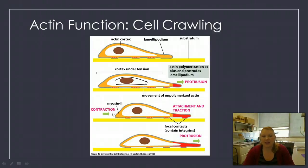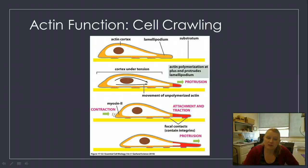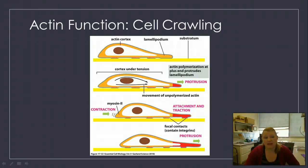The contraction from myosin helps contract the cell to catch up to the part that has been protruding, and then it starts all over again. Remember, this is one of the main functions of actin, but actin does not do this on its own — it has those ARP molecules that help this occur.